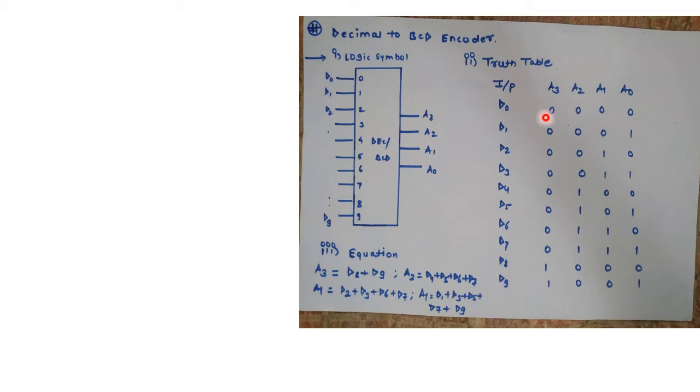Now based on the truth table we can fetch an equation for the first output like a3 similarly for a2, a1 and a0. Now coming to the point of a3, if you look at a3, a3 is 1 or high for two combinations. One is for d8 and one is for d9. And as we are dealing with sum of product, so the logical equation for a3 becomes addition of d8 with d9.